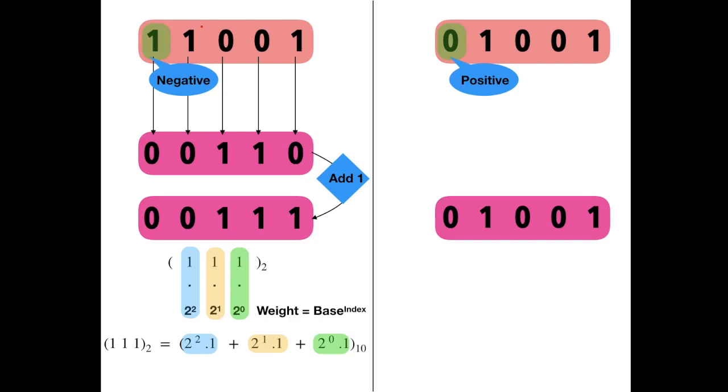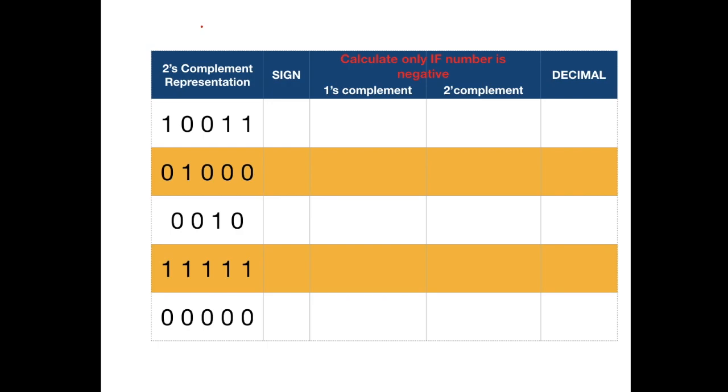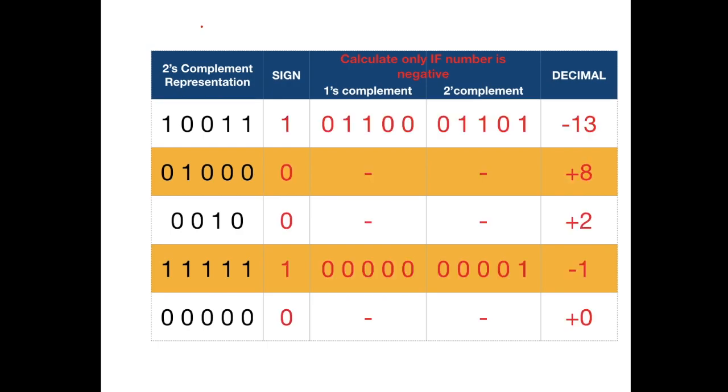So we are going to repeat this process for the number in the right. So the magnitude is 8 plus 0 plus 0 plus 1, which is 9. So the final answer is plus 9. Here are some more questions for you to try, and these are the answers.